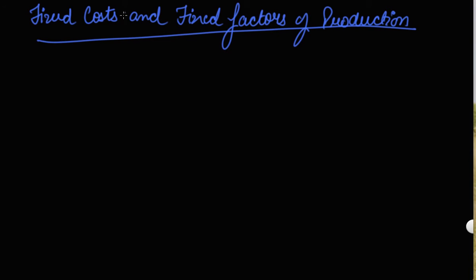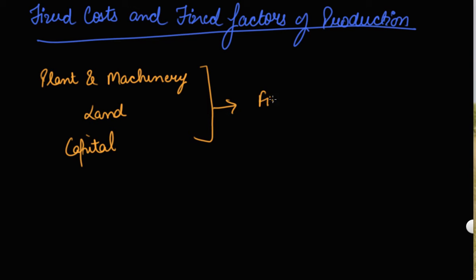Now understand the fixed cost and the fixed factors of production. Fixed cost includes your plant and machinery, your land, your capital. These are the fixed factors of production. Fixed costs refer to the expenditure incurred by the producer on the fixed factors of production like plant and machinery, land, capital. The application of these factors cannot be changed during the short period.